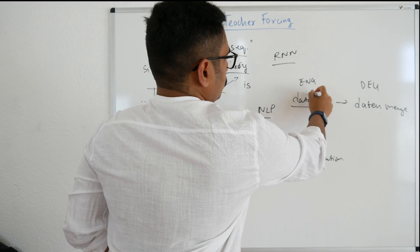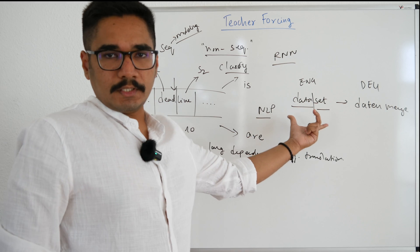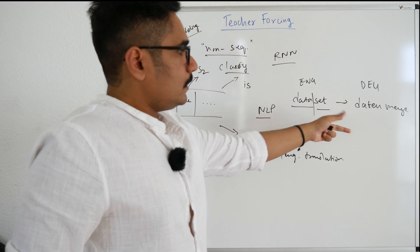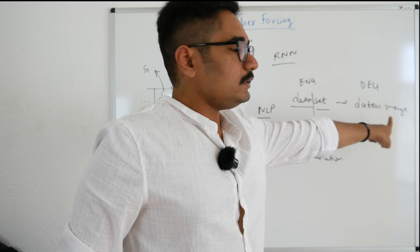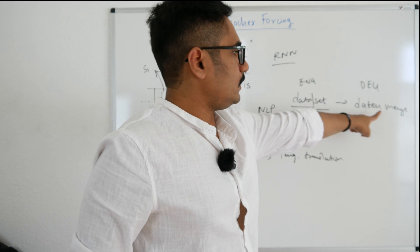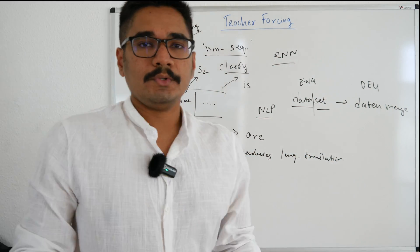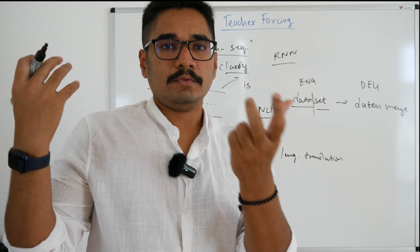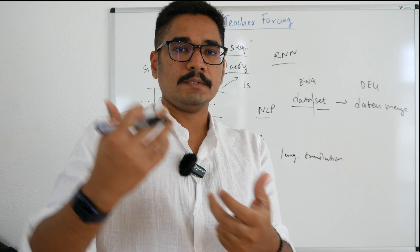Now say for example you don't consider this as one particular word and you consider this as two words. Then the meaning changes and this doesn't mean like dataset but something else. So especially in that case what you need is to have the translation with word dependencies in the long term sequences.